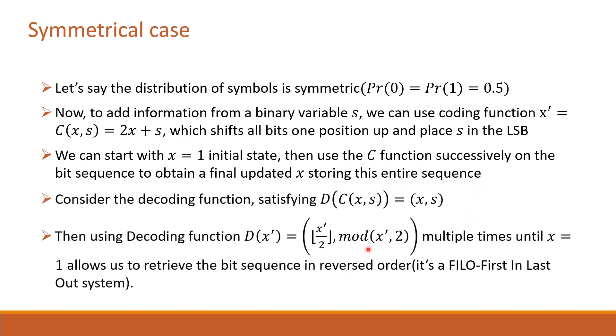For decoding, divide x' by 2. Take the remainder as the last coded symbol. Then the quotient corresponds to the remaining symbols. Decode the sequence in reverse order. Thus, this is a first in last out system.